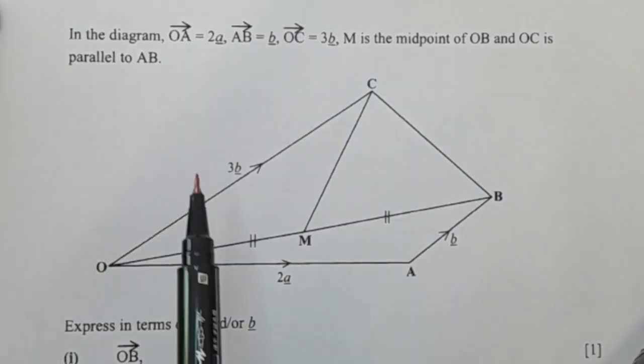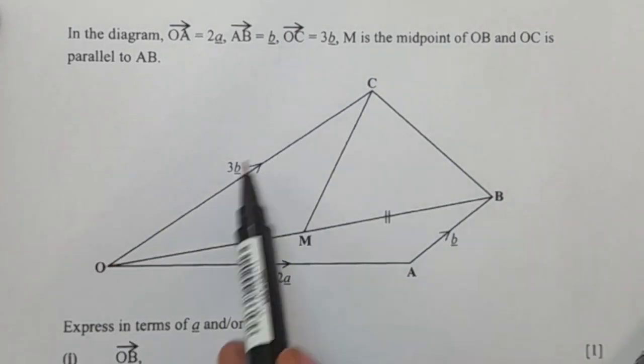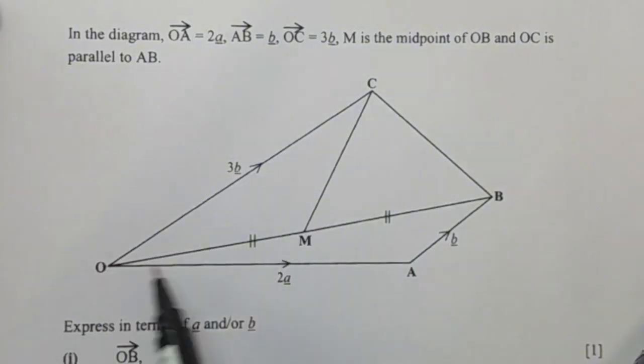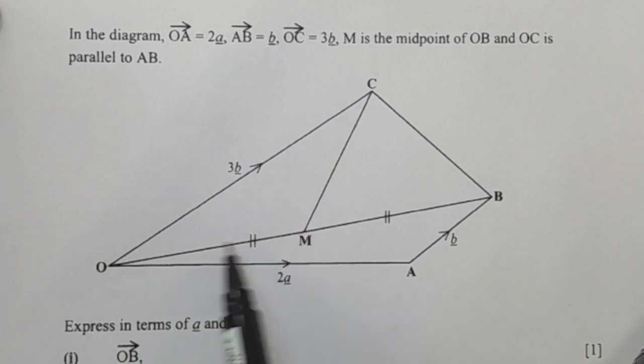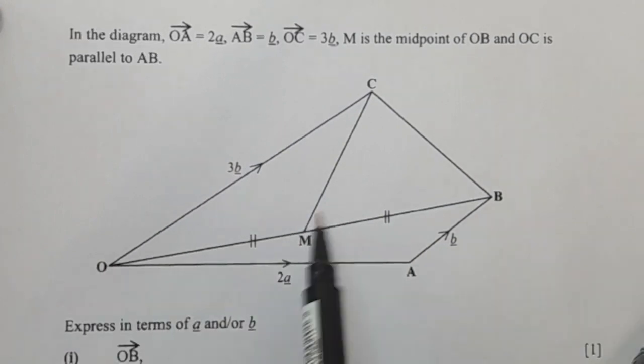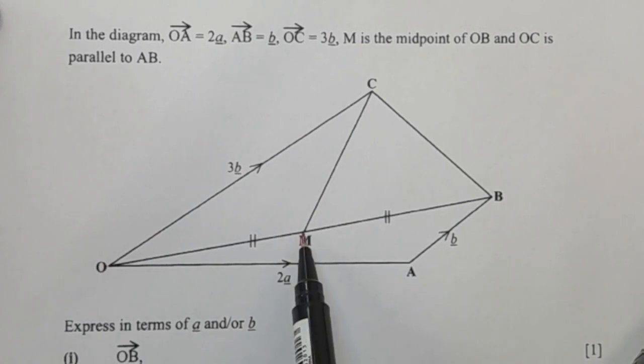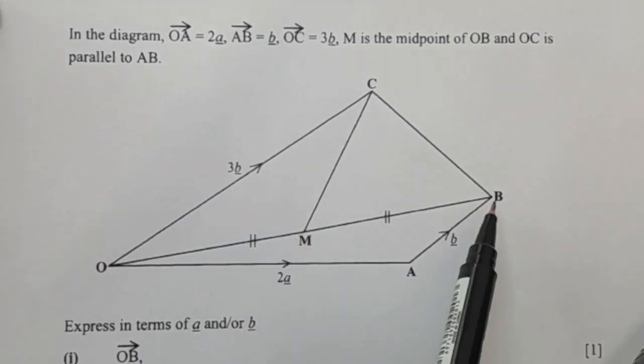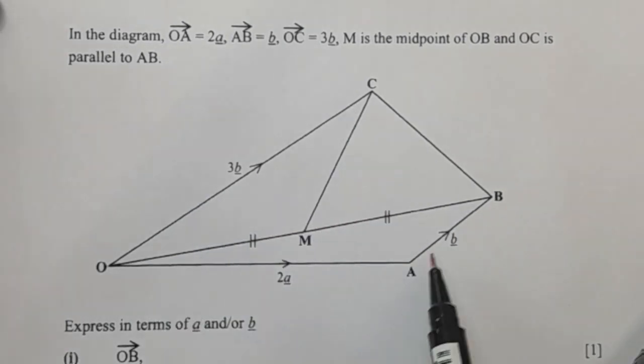This information that you've been given is important. You can see that OC is 3b, then OA is 2a, AB is b, and they are saying M is the midpoint of OB, meaning the distance from here to M is equal to the distance from M to B. And they are also saying this line is parallel to this line.